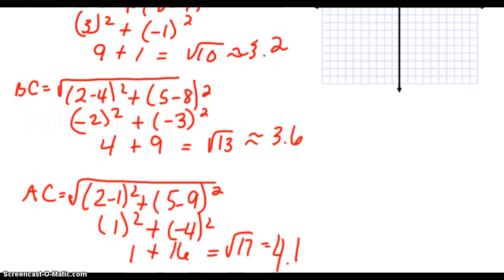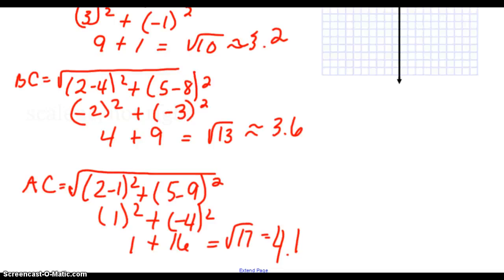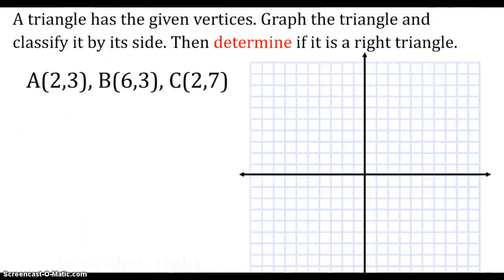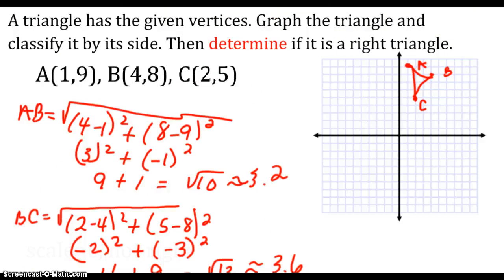I worked on AC, and AC shows that it's 2 minus 1 squared plus 5 minus 9 squared, and then I get 4.1, the square root of 17. So as you can see, these three are different. If they are different, I've determined that it's scalene, because that is when three different sides of a triangle.